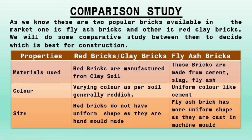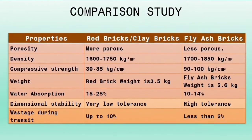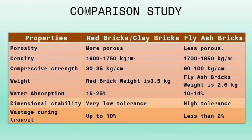Color: red bricks have a color varying as per soil, generally reddish, while fly ash bricks have a uniform color like cement. Shape: red bricks do not have a uniform shape as they are hand-mold made, while fly ash bricks are more uniform in shape as they are cast in machine molds. Porosity: red bricks or clay bricks are more porous, while fly ash bricks are less porous.